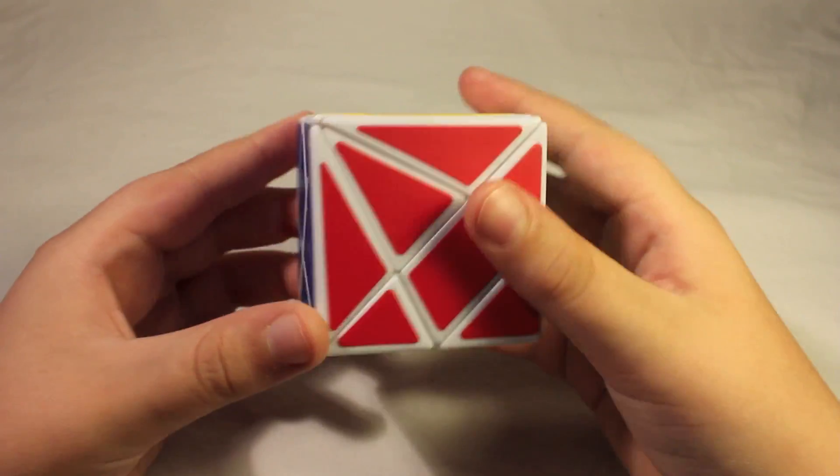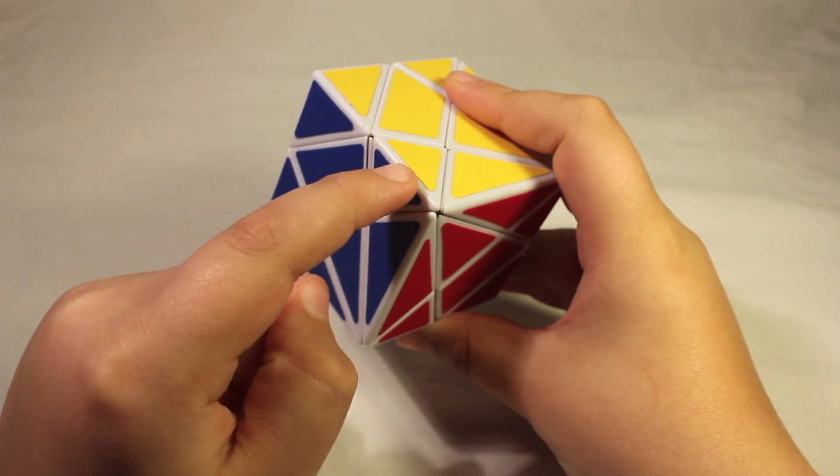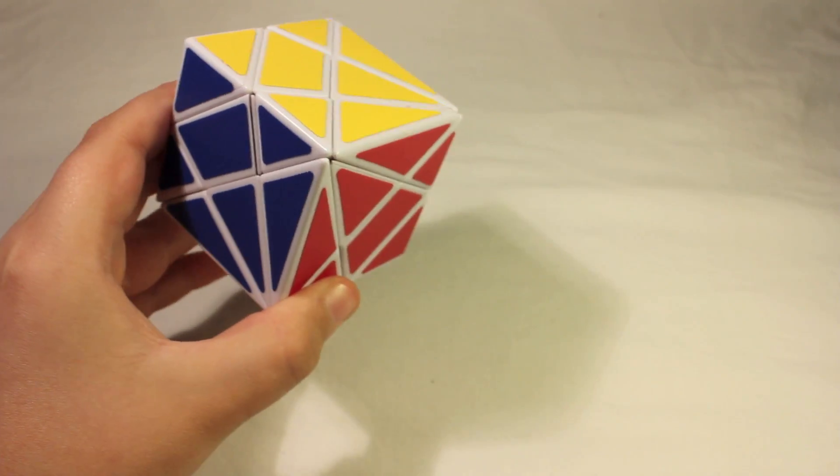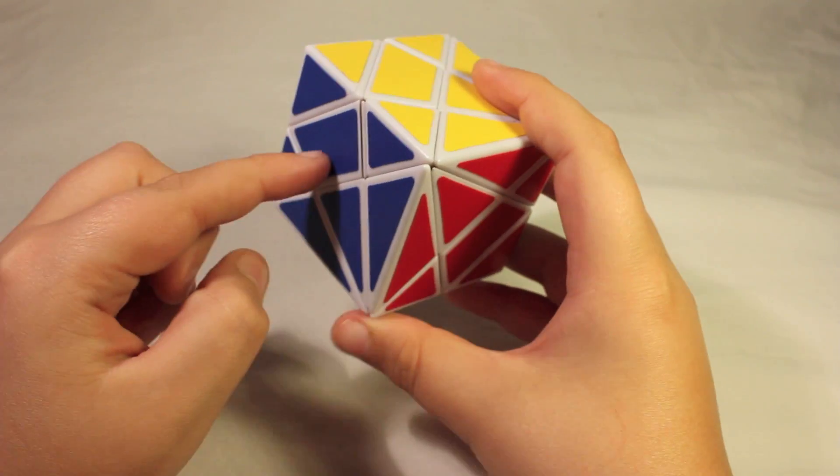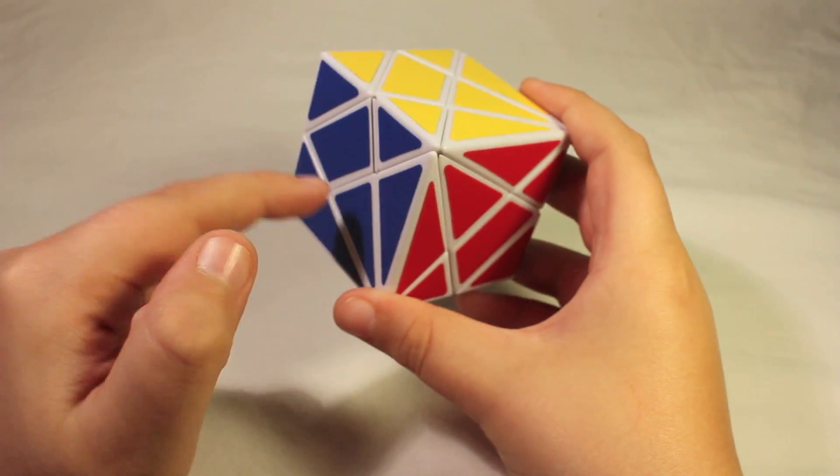So on the Axle Cube, we have a center. This is a centerpiece actually. Hold it kind of like that. You can see that. And so these are edges and these are corners.